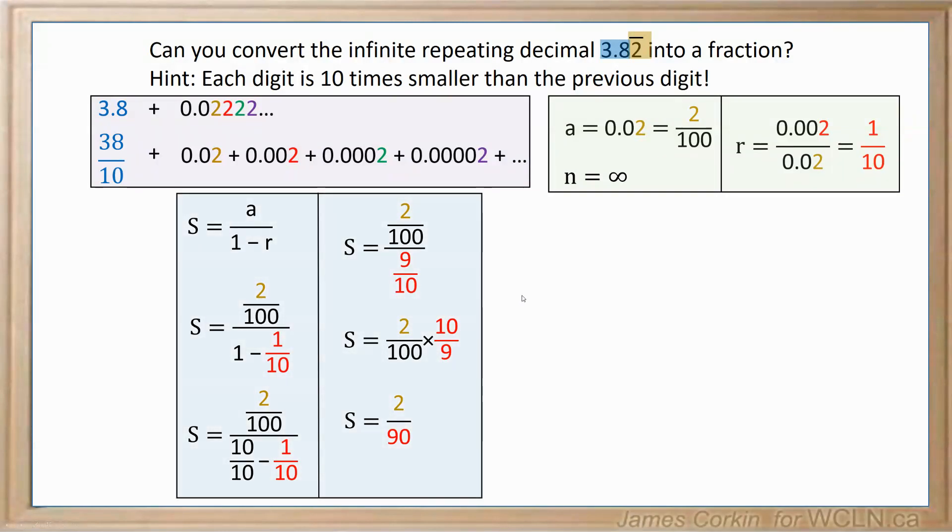So the final step is to take our two fractions and add them together. To do that, you're going to need to create a common denominator. So we're going to multiply top and bottom of this one by 9 to get 342 over 90. And now we can add our numerators, 344 over 90.